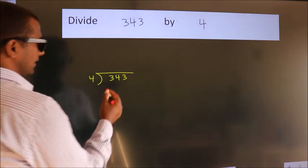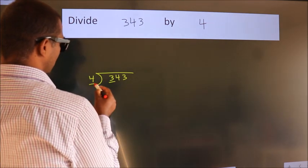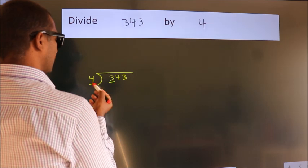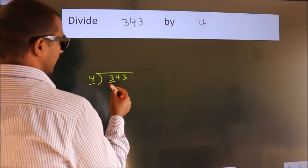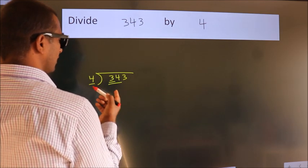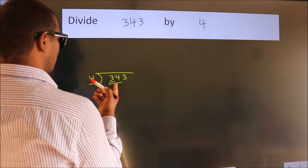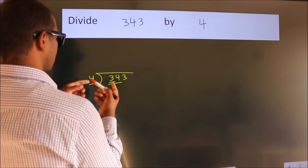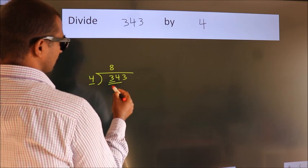Next, here we have 3, here 4. 3 smaller than 4. So, we should take 2 numbers. 34. A number close to 34 in 4 table is 4 times 8, 32.